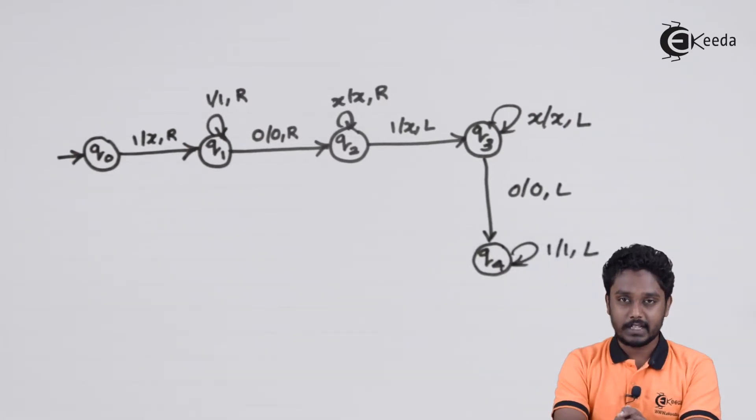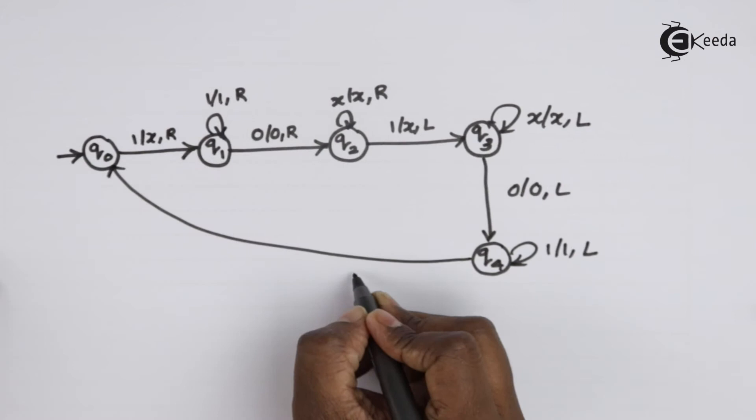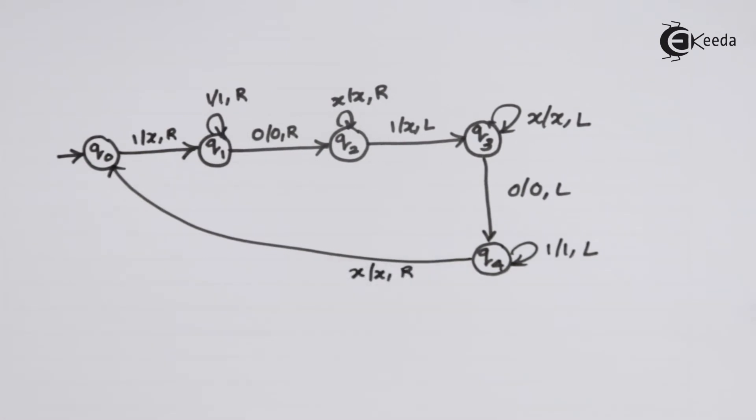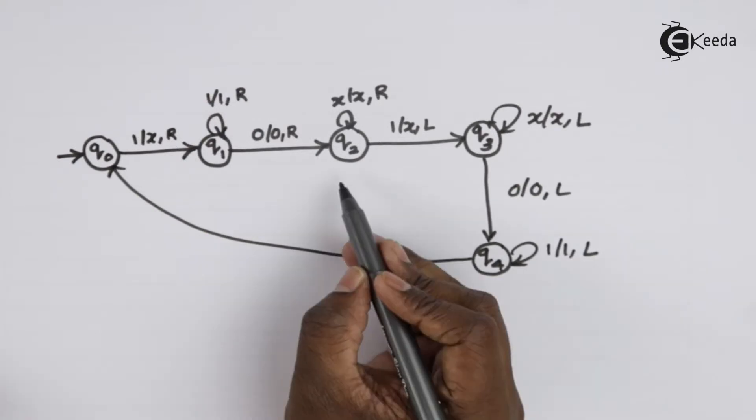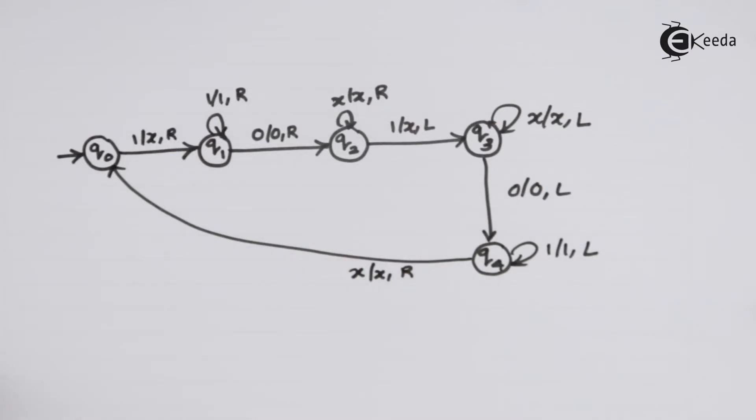Again we will skip all the 1's. Whenever we see the first x, we know that we have encountered the end of the list of 1's. So we will move to the right. You will see that this much working of the Turing machine is similar to the one that we discussed earlier. From q2, we have introduced the state which represents number 2 is greater than number 1.